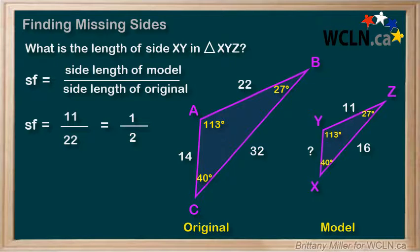Now, which side in triangle ABC corresponds to the side that we want to find? It's AC. We multiply the length of AC, which is 14, by the scale factor of one-half, and we get 14 over 2, which is 7. So, XY is 7 units long.